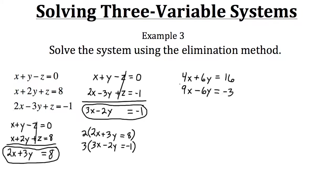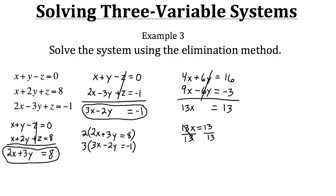Now we add the two scaled equations together. Four x plus nine x gives thirteen x, and six y minus six y cancels to zero. On the right side, sixteen minus three equals thirteen. So we have thirteen x equals thirteen. Dividing both sides by thirteen, x equals thirteen over thirteen, which reduces to one. So our solution has an x value of one.